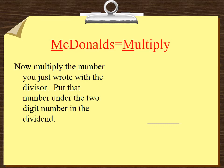McDonald's equals multiply. Now multiply the number you just wrote with the divisor. Put that number under the two-digit number in the dividend. We put 64 under 65.